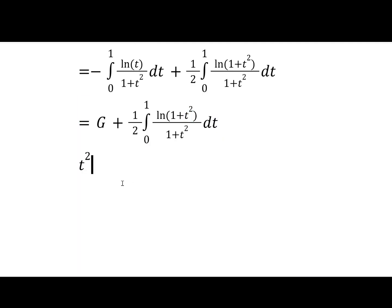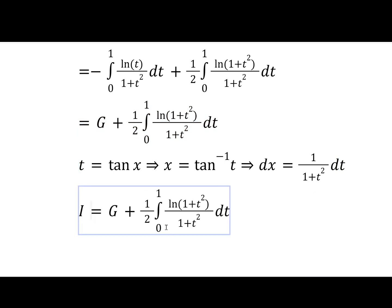So now we're going to do a t equals tan x sub on this second integral, because you see we have 1 plus t squared everywhere. It kind of makes sense. And then that means dx will be 1 on 1 plus t squared dt. And that's good, because we actually have that exactly in the integrand. So we'll just replace that with dx later. But the bounds will become tan inverse 0 to tan inverse 1.